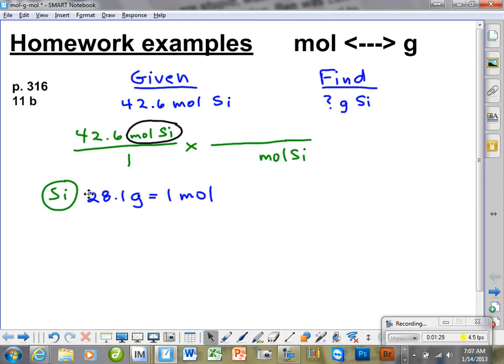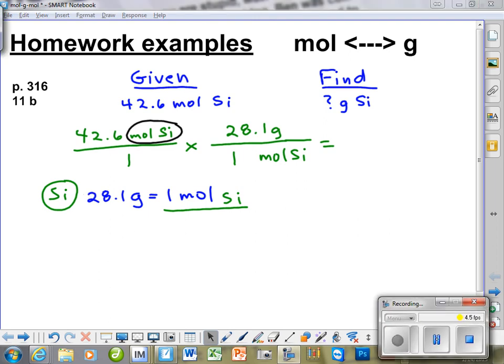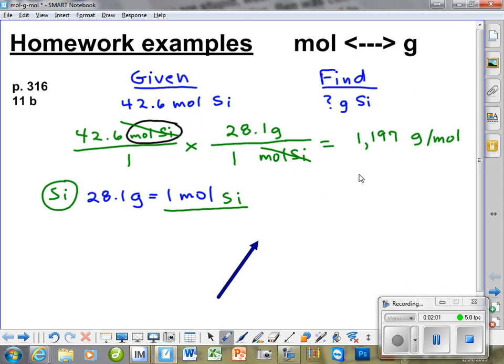So we're going to take the number that goes with moles of silicon, and let's write silicon here again. This guy right here is going to go on the bottom. So that's where our 1 comes from. And then we put the 28.1 grams is going to give us our answer. So when you run that number on the calculator, that's what you're going to get. Now that has to be changed to scientific notation. So if we're going to change to scientific notation, we're going to have to move that decimal.